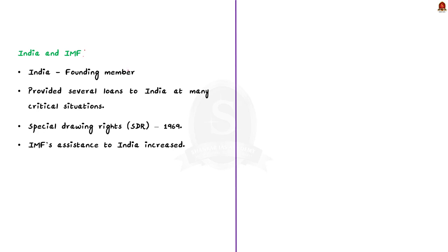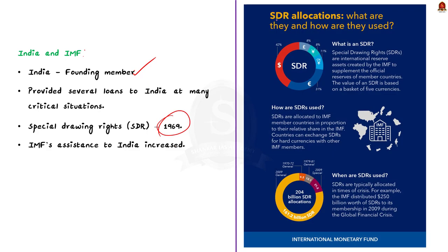India is a founding member of the IMF. IMF has provided several loans to India at many critical situations. After the creation of Special Drawing Rights, SDR, in 1969, the assistance India can obtain from the IMF increased. Special Drawing Rights, or SDR, is an international reserve asset created to supplement member countries' official reserves. The value of SDR is based on a basket of five currencies: the US dollar, the euro, the Chinese renminbi, the Japanese yen and the British pound sterling. India has occupied a special place in the Board of Directors of the fund and has played a credible role in determining the policies of the fund, increasing India's prestige in international circles.